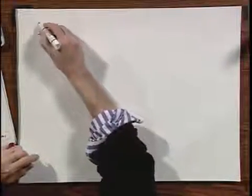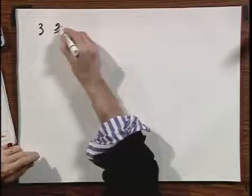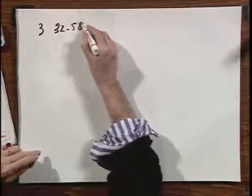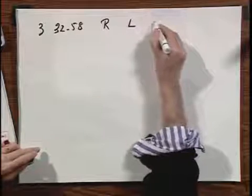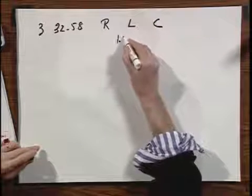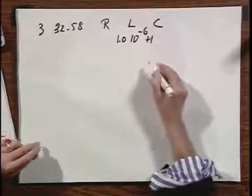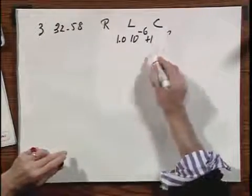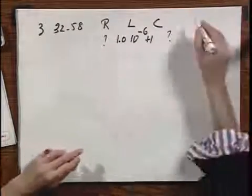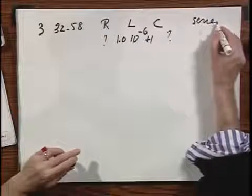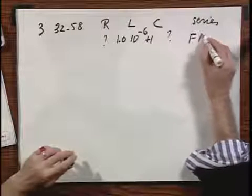Problem number three, 3258. It is an RLC circuit. The L value is 1.0 times 10 to the minus 6 Henry. We don't know C. We don't know R. They are in series.